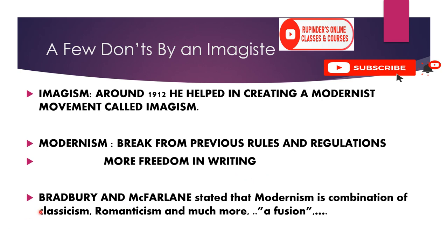This essay falls under the modernism unit. Bradbury and Macfarlane, two other writers in the unit, define modernism as a combination — a fusion — of classicism, romanticism, and much more. Even when we are breaking rules, we are using old rules, not creating them anew. Whatever happens in modernism has a glimpse of the past: classicism, romanticism, and neoclassicism all shine through it. Imagism is using an image instead of too many words; modernism is breaking from previous rules while remaining a fusion.